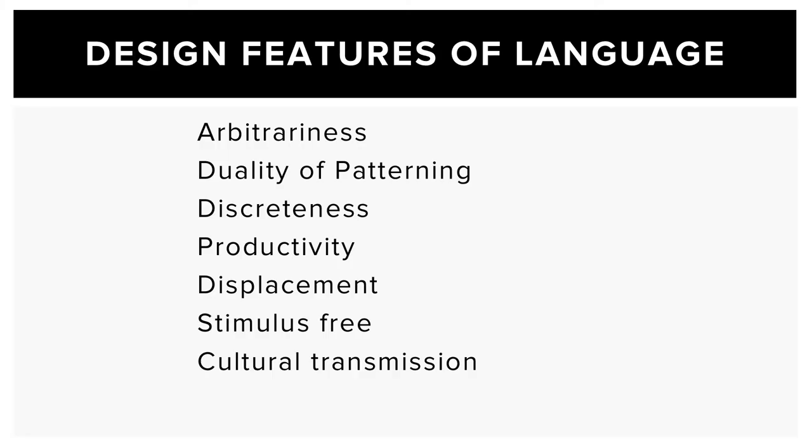Firstly, language uses arbitrary symbols, so that the meanings are not predictable from forms, the words or sentences that are used, and forms are not predictable from meanings.